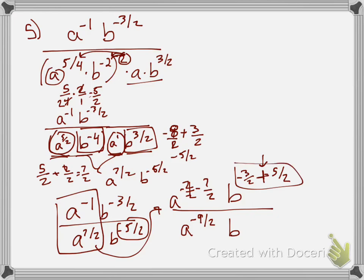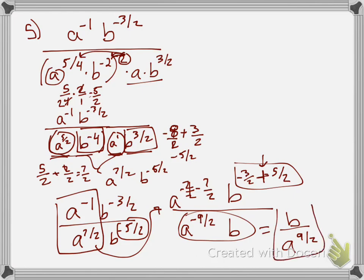No points off for using your calculator. Just realize this can't be a final answer because of the negative exponent on a. One final step: I keep b on top and move a to the nine-halves into the denominator, and that's the final answer. Thanks for watching — try the video check and be ready to discuss it with your group or with me tomorrow.